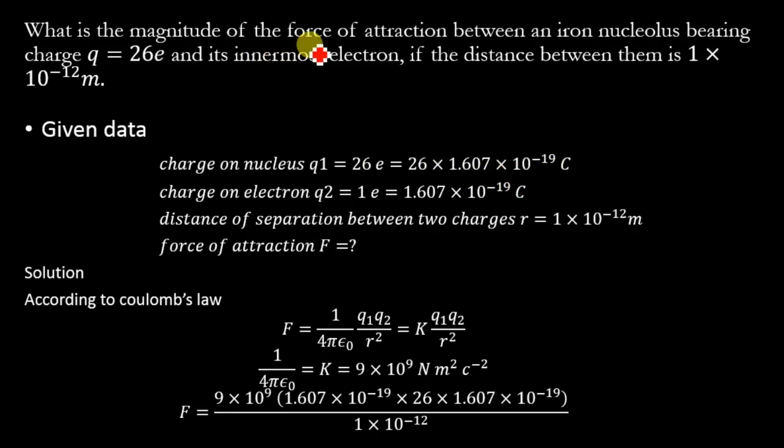The force of attraction is between iron nucleus and innermost electron. So charge q2 is only a single electron = 1.607 × 10^-19 coulomb. The distance of separation between these two charges r = 1 × 10^-12 meter, and we will calculate the force of attraction F.